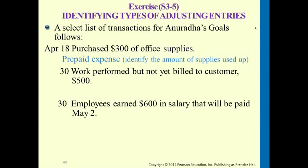Work performed but not yet billed to the customer — which category would this fall under? You've performed the work but haven't billed the customer, meaning you haven't collected the cash. This falls under accrued revenues, using the account accounts receivable. It's the same as providing services on account.